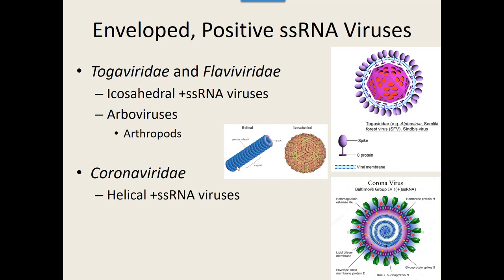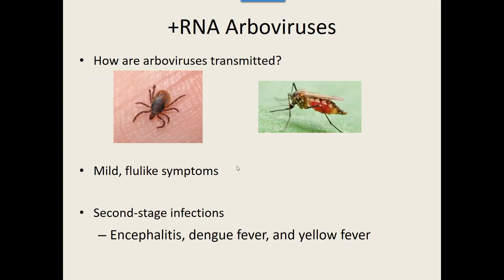The arboviruses are spread by some type of arthropod — whether it's a mosquito, a tick, a fly, or lice — and so they can be spread to humans, but can also be spread to other animals, usually smaller animals that they feed on.